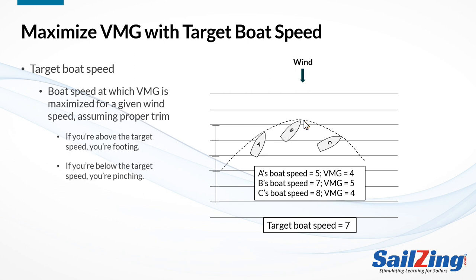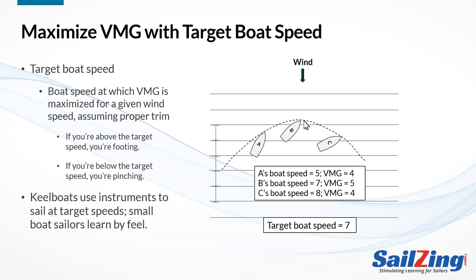If your boat is sailing above the target speed, like C, you're footing. If your boat is sailing below the target speed, like A, you're pinching. In both cases, even though you're trimmed properly and sailing as fast as the boat will go for that trim, your VMG is less than a boat sailing at target speed. Many keel boats have instruments with target speeds programmed into them for each wind speed — on these boats, the helmsman and crew adjust the boat's heading and trim until they match the target. We small boat sailors don't have instruments; we learn to maximize VMG as best we can by feel and other cues — more about this shortly.